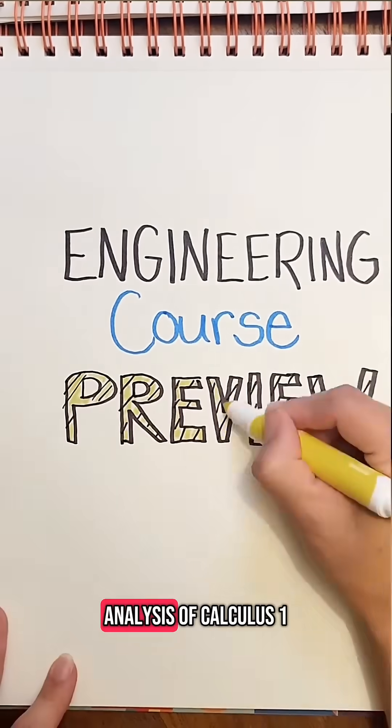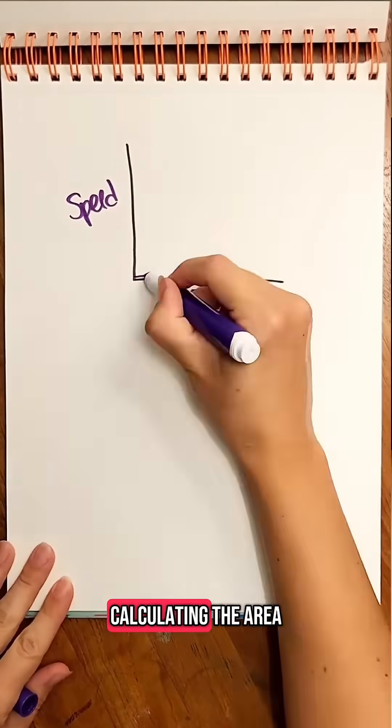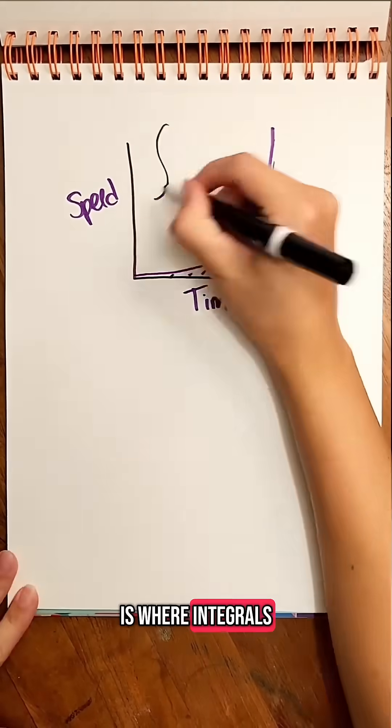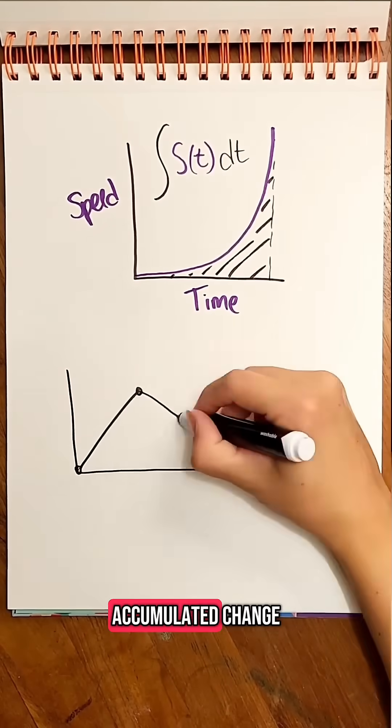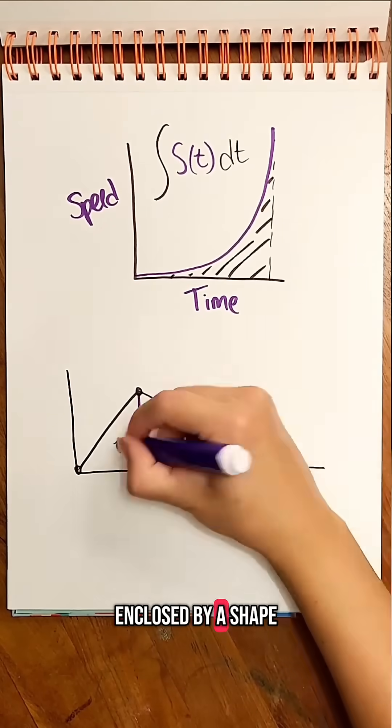Calculus 2 builds on the mathematical analysis of Calculus 1 and explores more advanced techniques. Picture a graph of speed versus time. Calculating the area under this curve is where integrals come into play. They help us measure things like accumulated change or the space enclosed by a shape.